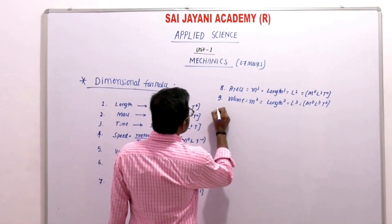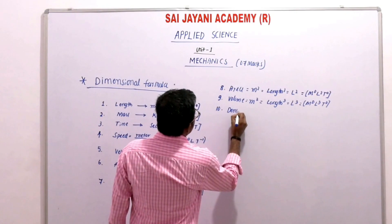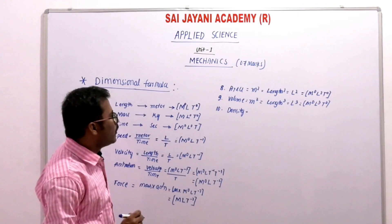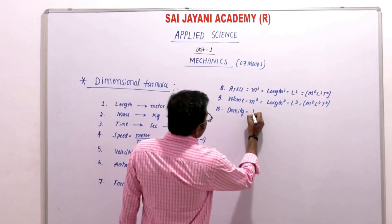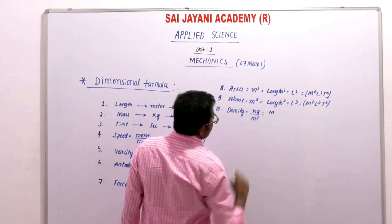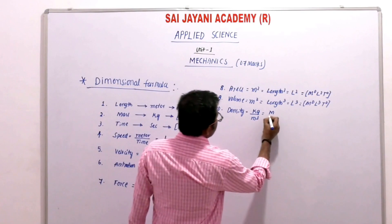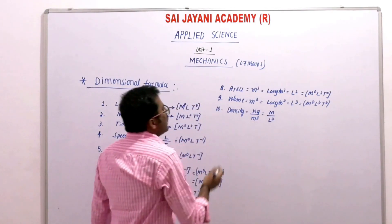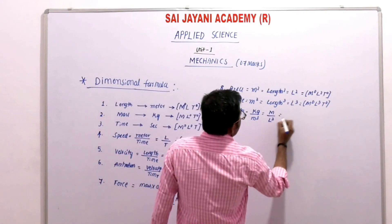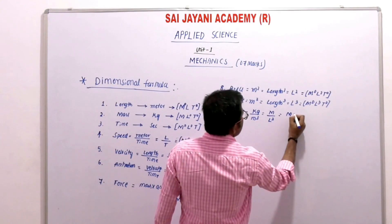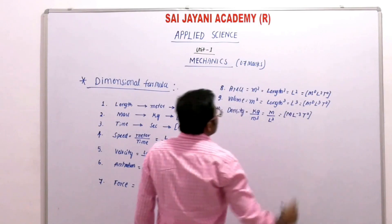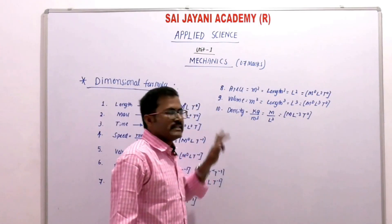Next is density. Density is defined as the ratio of mass by volume. The SI unit of density is kg per meter cube. Here kg represents mass M, and meter cube represents L³. So density has mass M, and L to the power minus 3 (since volume is in the denominator), and no time. The dimensional formula for density is M L⁻³ T⁰.